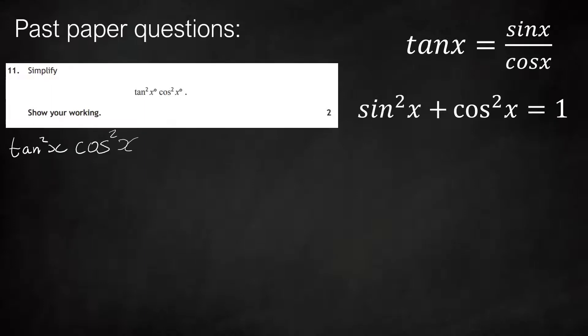It's asking us to simplify tan squared x cos squared x. The first thing we'll notice is tan in the question, so we'll use the identity that tan x equals sine x over cos x. We're looking for tan squared x, so we'll remember that tan squared x is just tan x all squared. Using the definition we had before, tan squared is this thing all squared, so we're taking sine x over cos x and squaring the whole thing. Squaring a fraction is just squaring the top and bottom. That means tan squared is sine squared over cos squared.